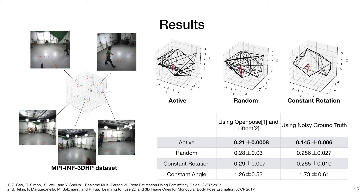We also test on the MPI-INF 3D human pose dataset to show that our model transfers to real scenes successfully. This dataset includes 14 cameras placed at various distances to the subject. We show that we are able to outperform the baselines.